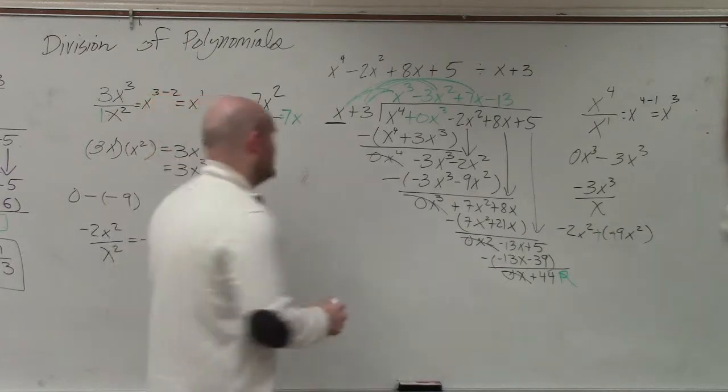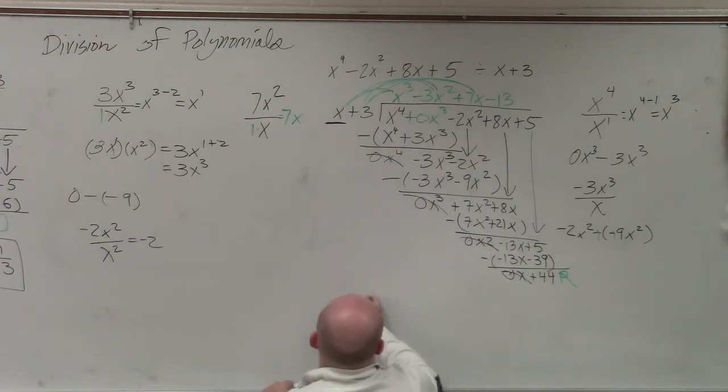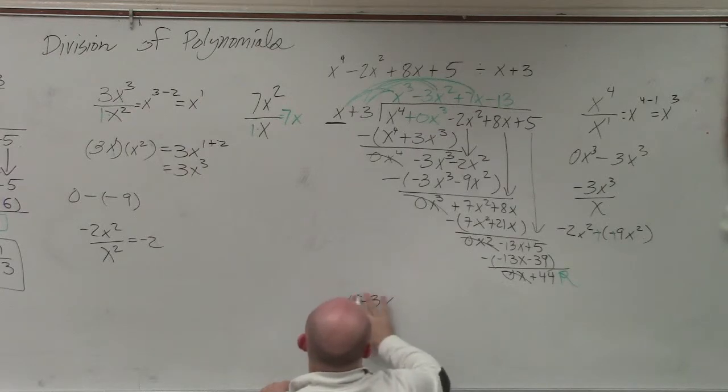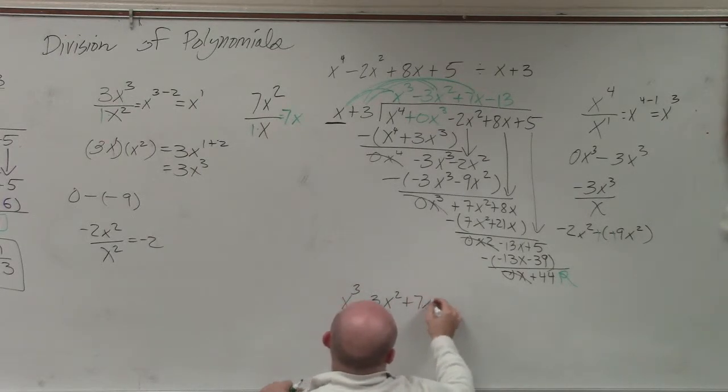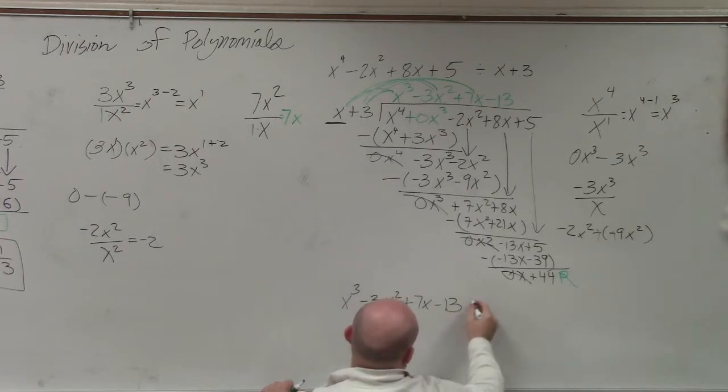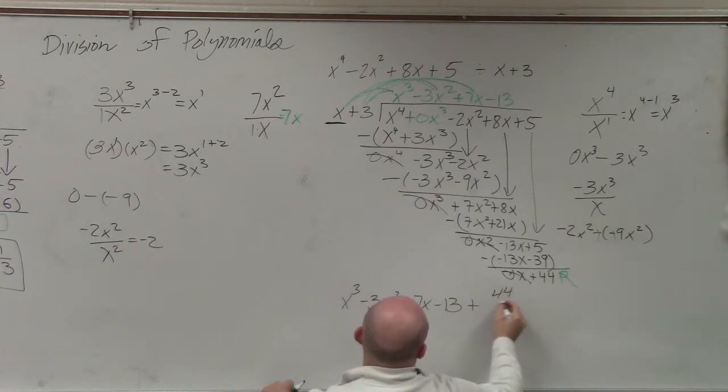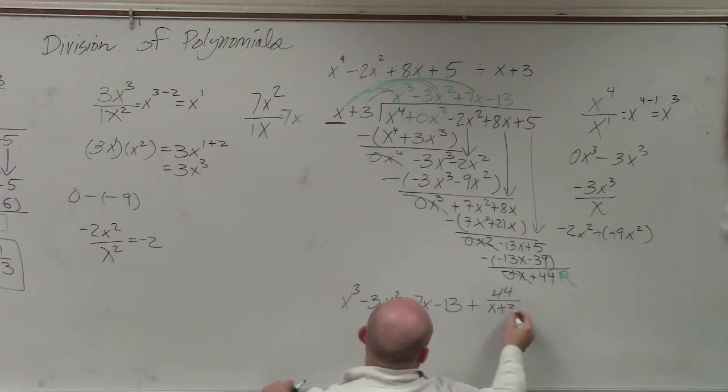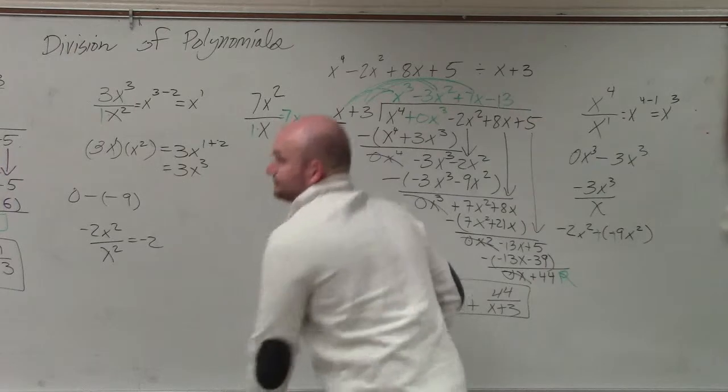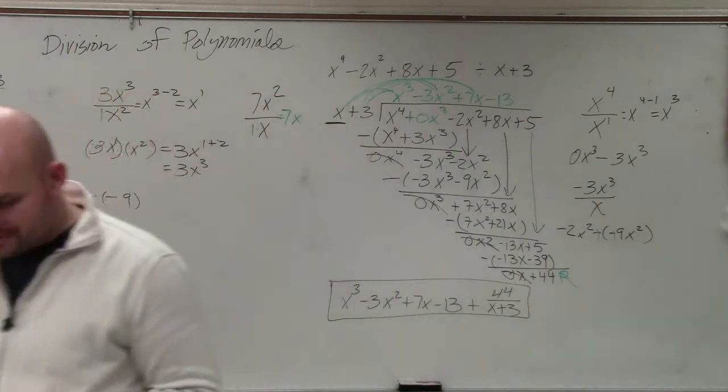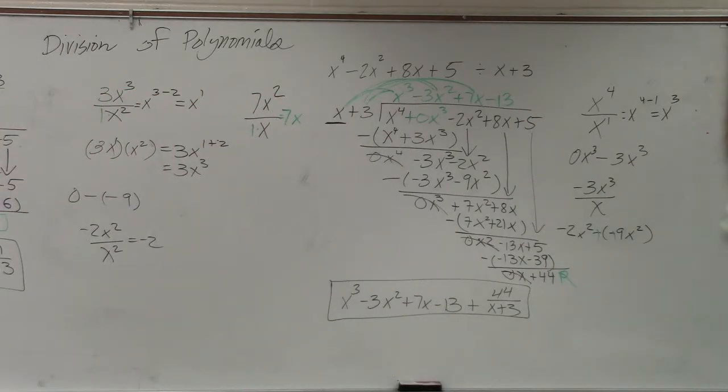So to write our answer, it would look like this. x cubed minus 3x squared plus 7x minus 13 plus 44 over x plus 3. See? Wasn't that fun? No? It wasn't fun.